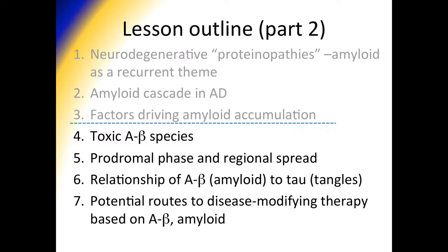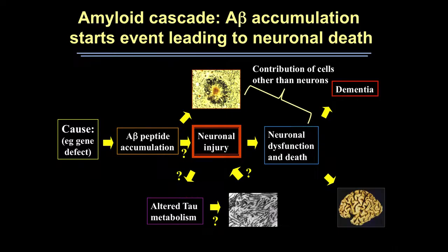In part two of this series, we will explore some of the toxicities that exist with A-beta, including monomers, oligomers, and plaques. I'll review the prodromal phase of disease — we now recognize that Alzheimer's and all the primary dementias are slowly progressive disorders. We'll discuss the idea of regional spread through circuitry, briefly review the relationship of A-beta to tau, which is very much a work in progress, and discuss potential routes to disease-modifying therapy based on A-beta and amyloid.